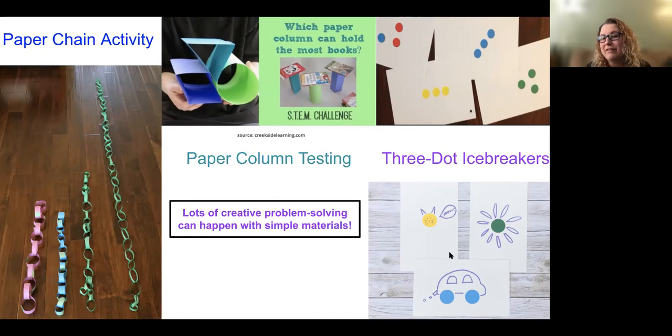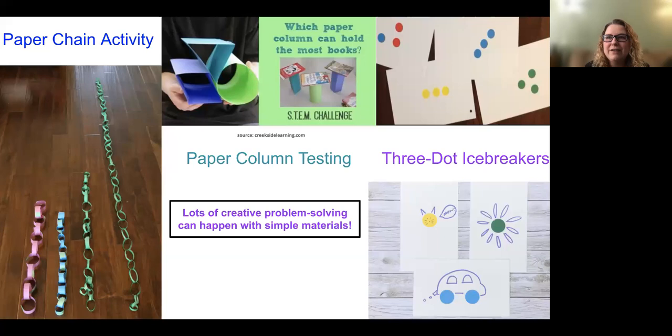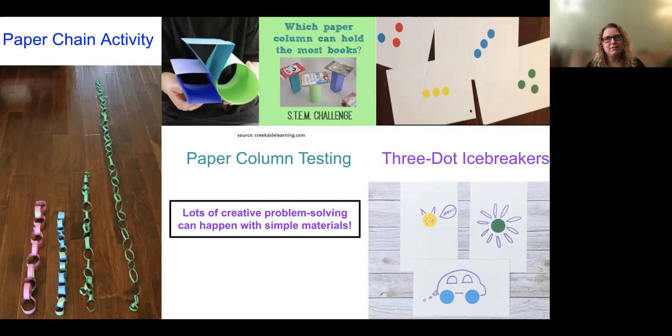The three-dot icebreaker is one of my favorites. You prepare cards with three different colored dots placed in random locations and give one to everybody — each person gets a different configuration. Then they just create a picture out of it. You'd be surprised what students come up with. See if they can relate it back to a book you're reading or a chapter you're working on in science. Getting them to think about that helps them start solving problems and thinking collaboratively if they're working in groups. It's a simple thing but offers a lot of educational value.